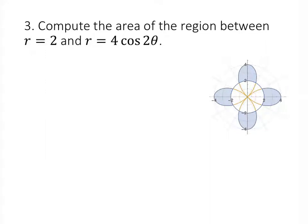Now for this last problem, we're trying to find the area of the region between two polar curves. We can make our lives easier by using symmetry. The region I'm outlining is actually 1/8 of the total — so there are 8 regions of identical area. If I set up an integral to evaluate the area of just that one region, I can multiply my answer by 8 to get the total result.